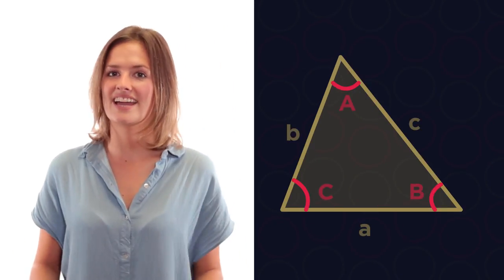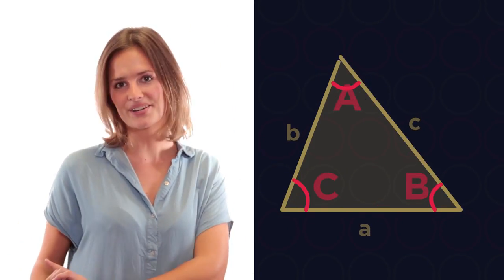Triangles. We learn about these a lot in maths. They're the simplest polygons. They have three sides and three angles.